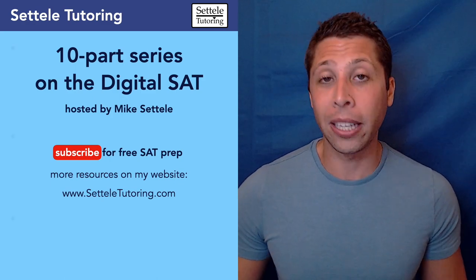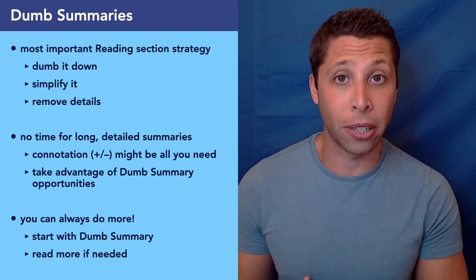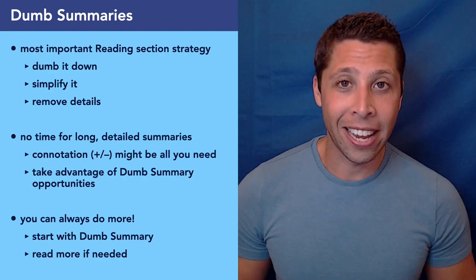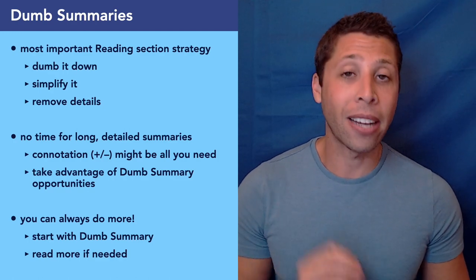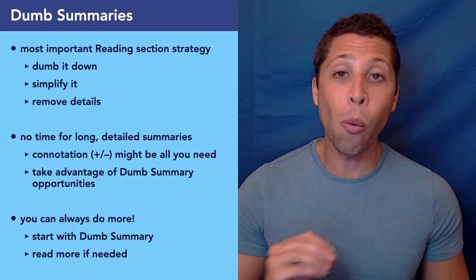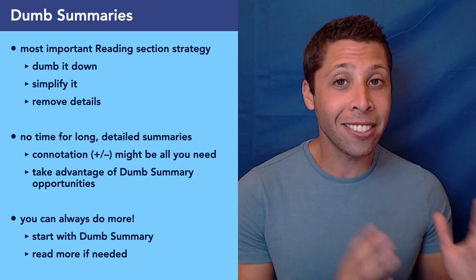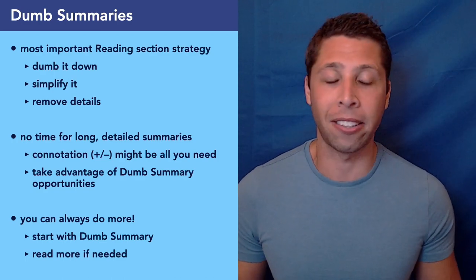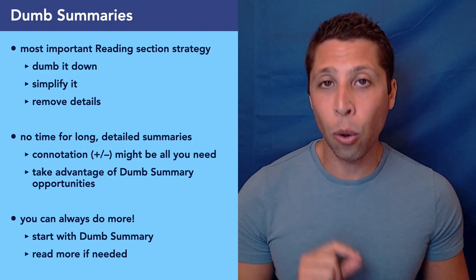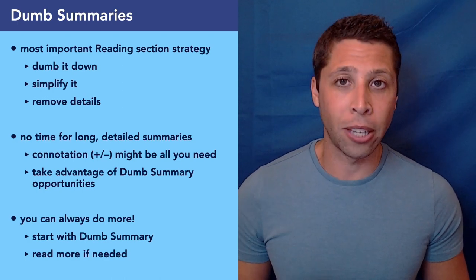Let's start by talking very quickly about the main strategy for the reading section, which I've called dumb summaries. Just don't worry about the details in most of the passages. Think about connotations, simple ideas that you can focus on and use to narrow down your choices. You don't want to worry about every single nuance and detail — you just don't have the time. But in this episode, I am going to contradict this a little bit: I am going to make you think about the details, but not in the passages — in the questions.